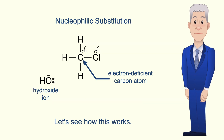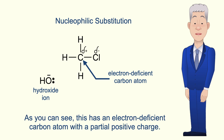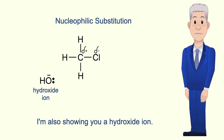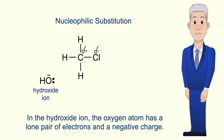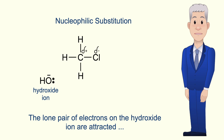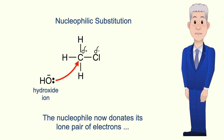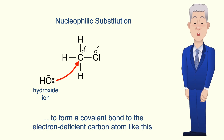So let's see how this works. I'm showing you here the haloalkane chloromethane. As you can see, this has an electron-deficient carbon atom with a partial positive charge. I'm also showing you a hydroxide ion. In the hydroxide ion the oxygen atom has a lone pair of electrons and a negative charge, and the hydroxide ion is an example of a nucleophile. The lone pair of electrons on the hydroxide ion are attracted to the electron-deficient carbon atom on the chloromethane. The nucleophile now donates its lone pair of electrons to form a covalent bond to the electron-deficient carbon atom.